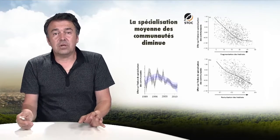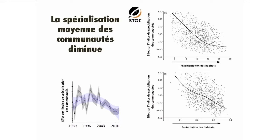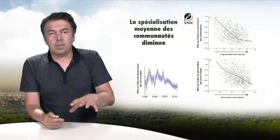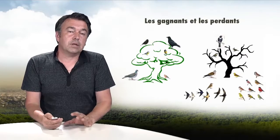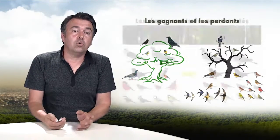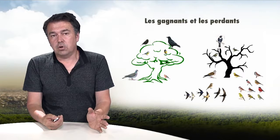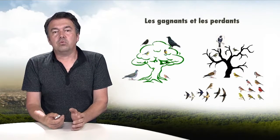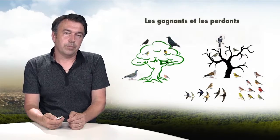Looking at how this is reflected in habitat gradients, there is a very powerful impact of habitat fragmentation on specialization: the more fragmented the habitat, the lower the specialization within a community. And the more the habitat is degraded, the more the specialization index decreases. There are a few winning species — especially generalist species — and a great number of losing species whose numbers decrease over time, especially insectivorous and granivorous species, due to recent changes in the common agricultural policy.